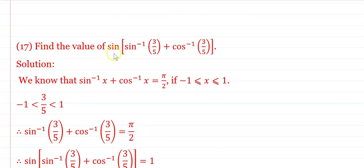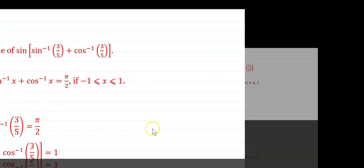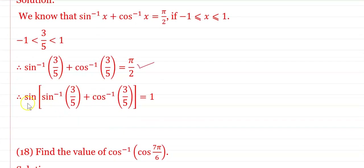Find the value of sin(sin⁻¹(3/5) + cos⁻¹(3/5)). We know sin⁻¹(x) + cos⁻¹(x) = π/2, where x ∈ [−1, 1]. Since 3/5 ∈ [−1, 1], sin⁻¹(3/5) + cos⁻¹(3/5) = π/2. Therefore sin(sin⁻¹(3/5) + cos⁻¹(3/5)) = sin(π/2) = 1.